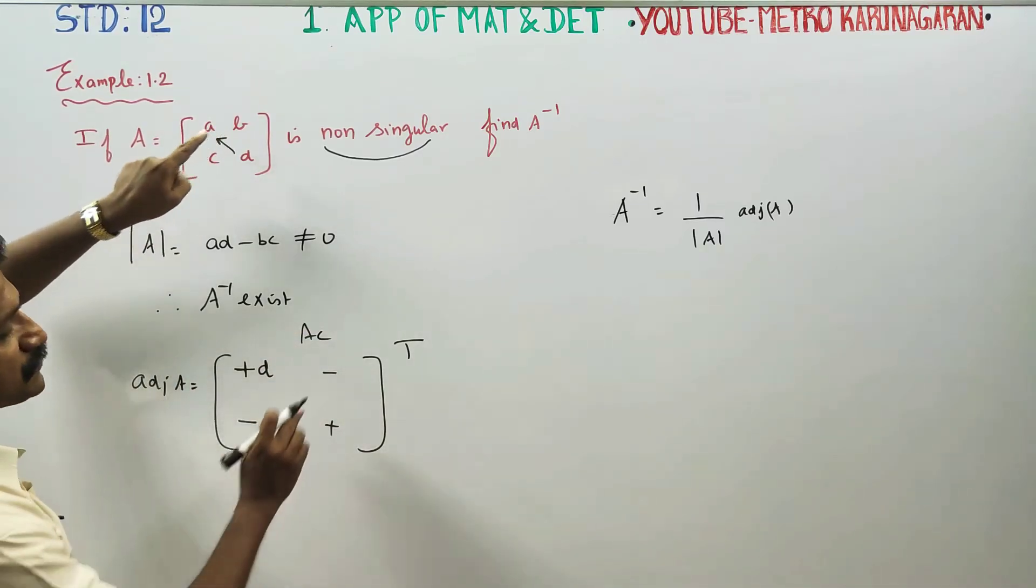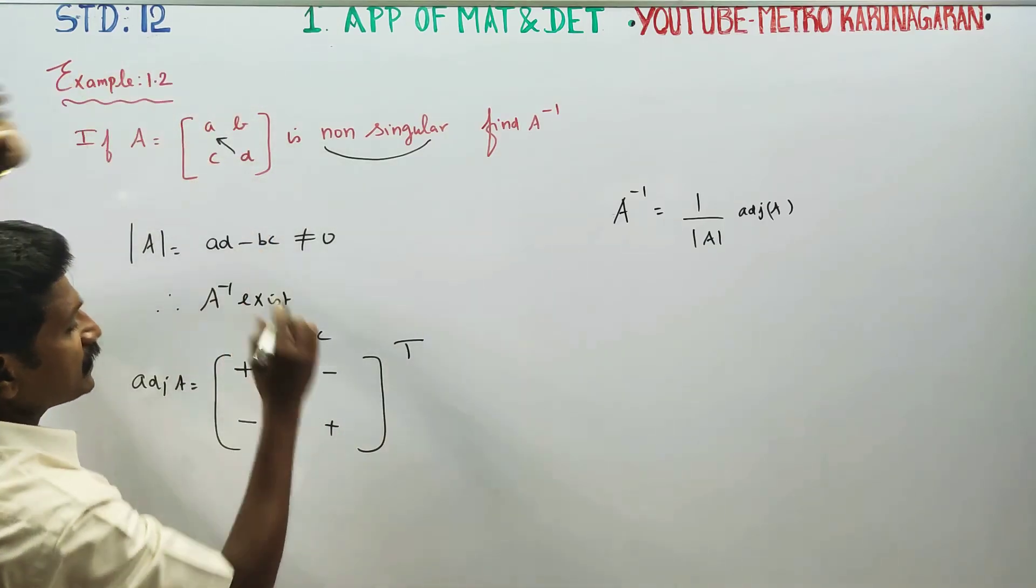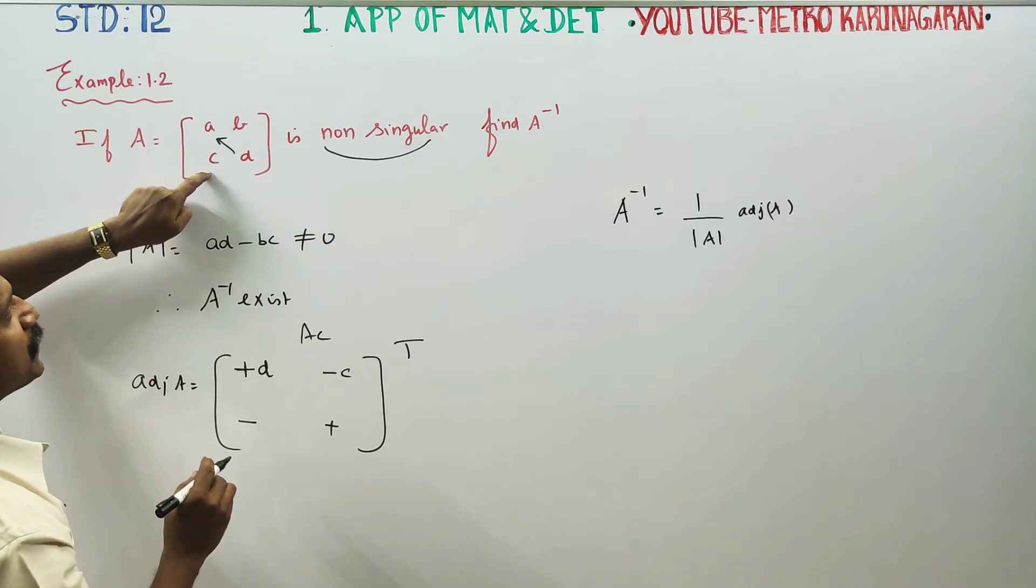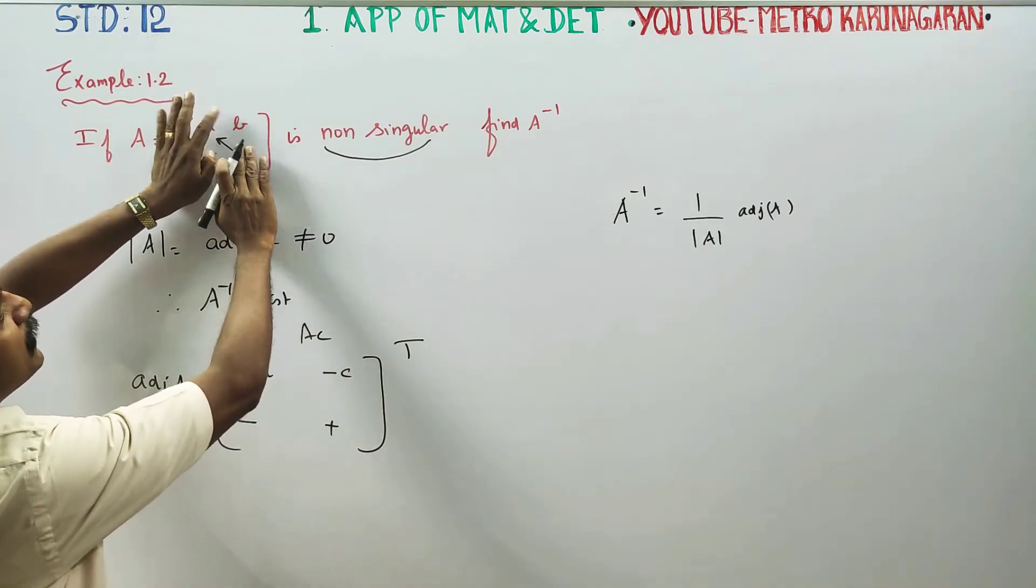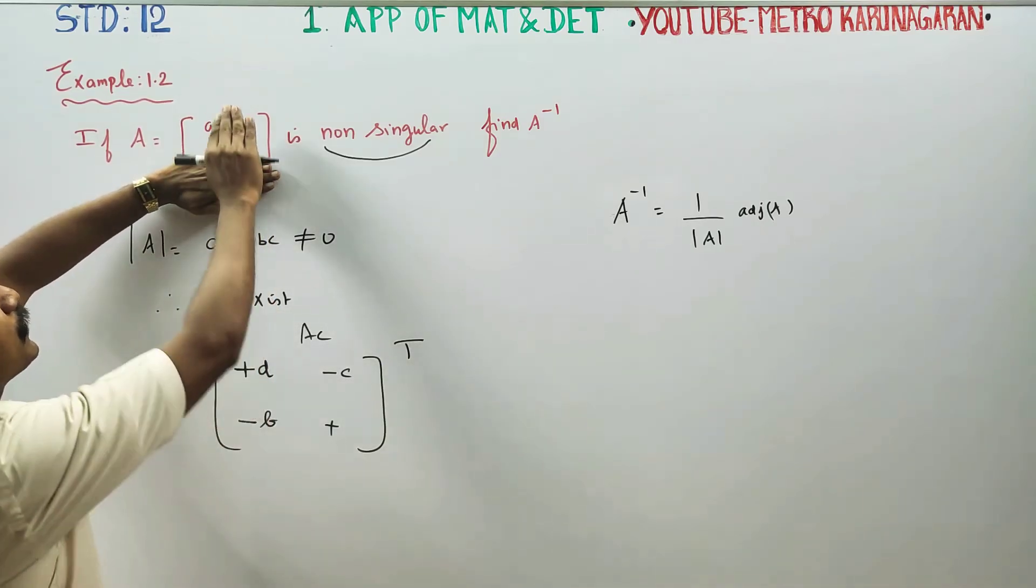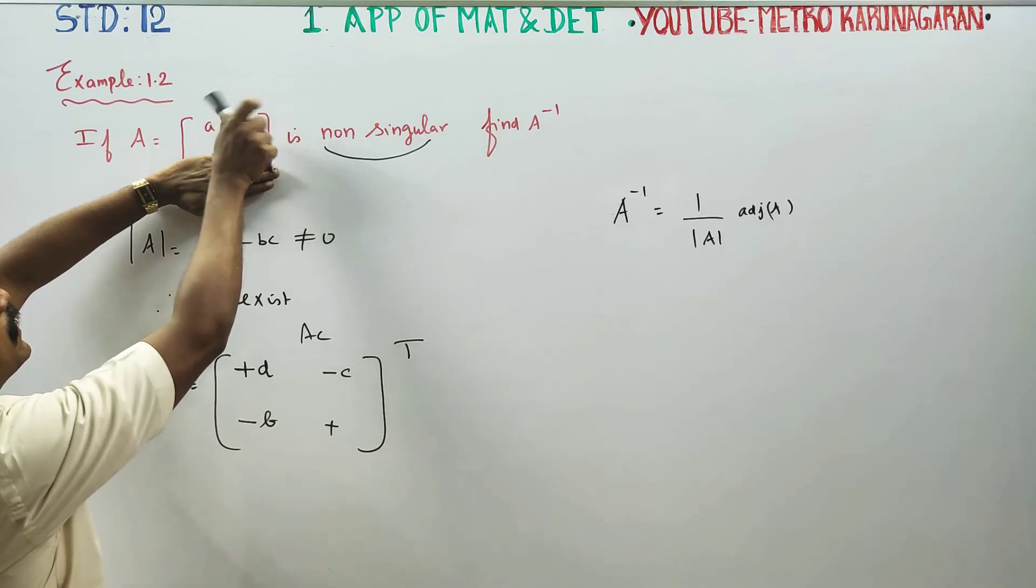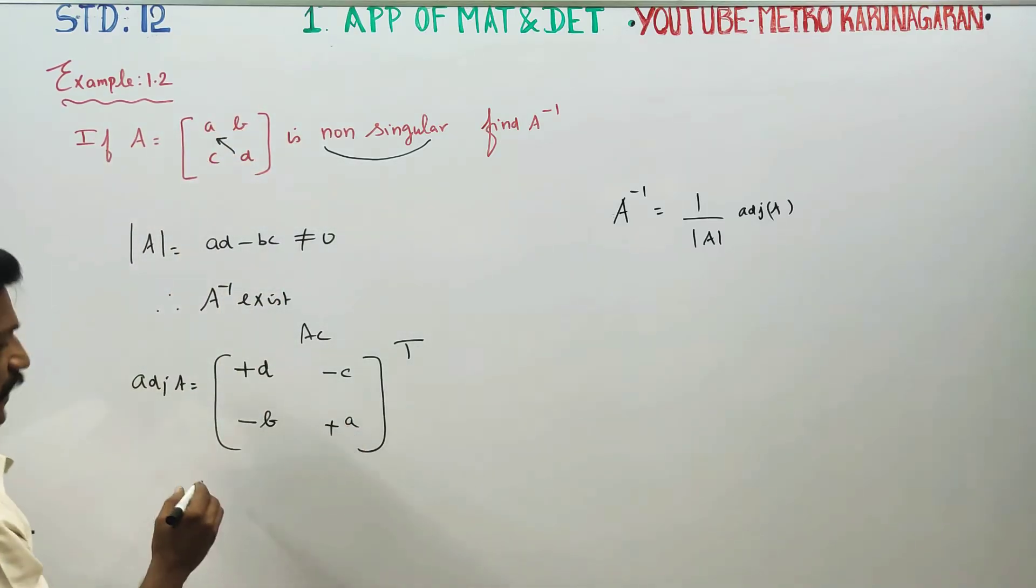If you look at B, close B row and column, you get D. If you look at C minor, close C row and column, you get B. If you look at D minor, close D row and column, you get A.